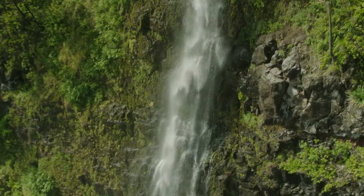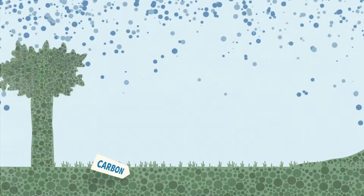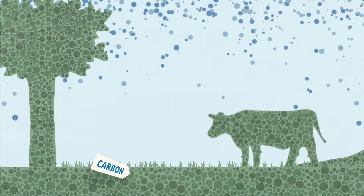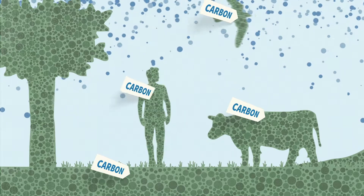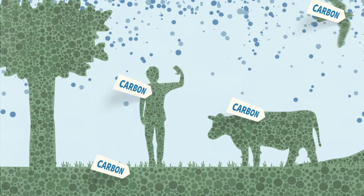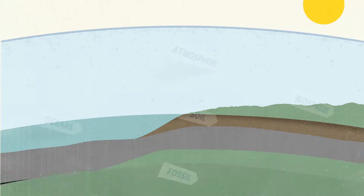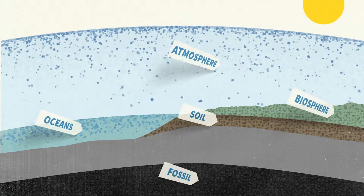Climate change is about too much carbon in our atmosphere. But carbon is part of the cycle of nature — it is one of the building blocks of life. Our bodies are 18.5% carbon. A certain percentage of our atmosphere is carbon. So it's all about balance. How can we find a healthy balance?